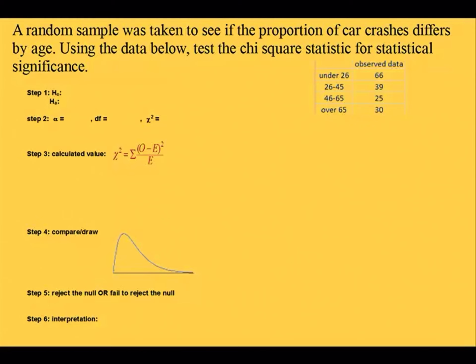A random sample was taken to see if the proportion of car crashes differs by age. Using the data below, test the chi-square statistic for significance. First thing we need are hypotheses. The research hypothesis Ha or H1 is known as the proportion of car crashes differs by age, which would mean then that the alternative to that, the null, would be the proportion of car crashes is the same, despite age.